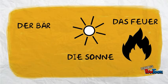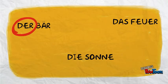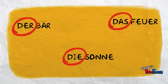How will you know what gender they are? Well, they usually come with articles. So it is Der Behr for masculine, Die Sonne for feminine, and Das Feuer for neuter.